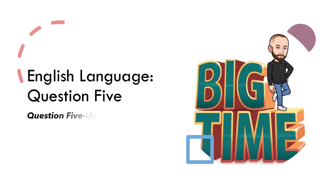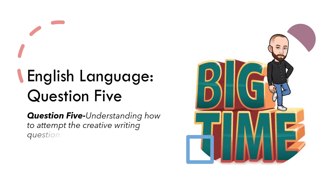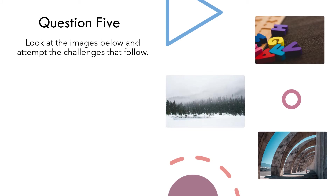Hi everyone, this is just a quick video taking a look at question 5 for the English Language paper: explorations in creative reading and writing. This video is going to take a look at how to approach the question and how to make sure that you're meeting the criteria that the examiner is looking for.